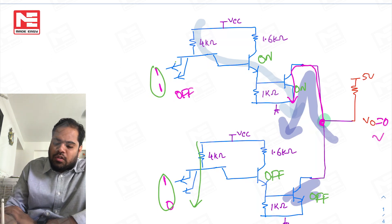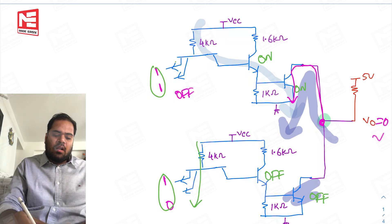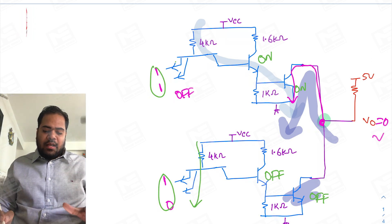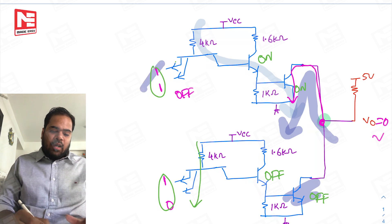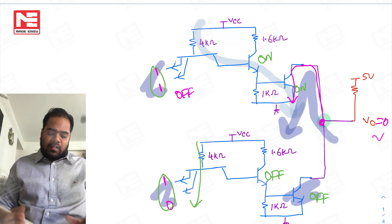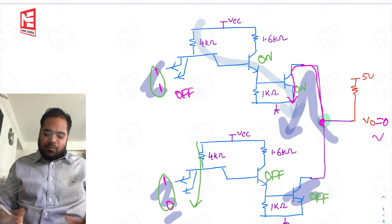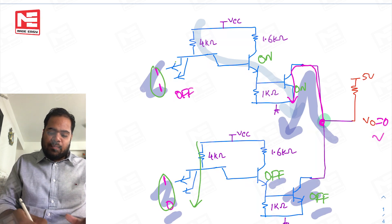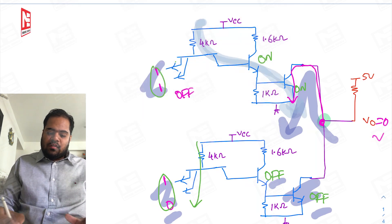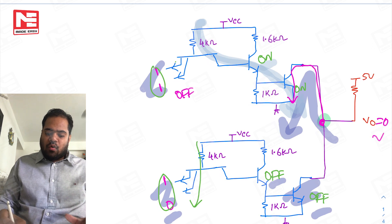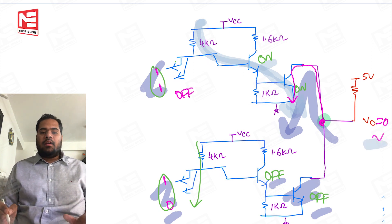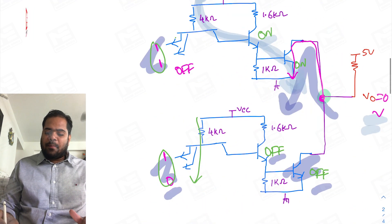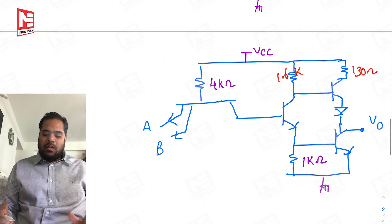Let me recap: we are applying 1,1 at one gate and 1,0 at the other. Whenever 1,0 is applied, one path is off — open circuit — but current is flowing through the other path, pulling this output to zero. So the output goes to zero, as expected for a wired AND.